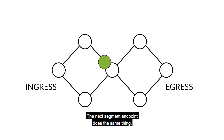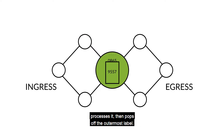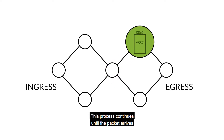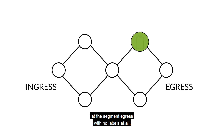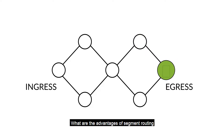The next segment endpoint does the same thing: it looks at the outermost label, processes it, and pops off the outermost label. This process continues until the packet arrives at the segment egress with no labels at all.